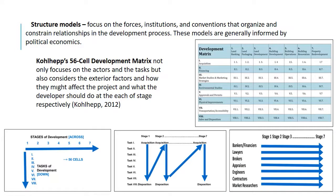Then came the structure models. Structure models focused on the forces, institutions, and conventions that organize constrained relationships in the development process. These models are generally informed by political economics. So we now have actors, economics, and the structure of development, and we start looking at the surroundings of the project. Colheb's 56-cell development matrix not only focuses on actors and tasks but also considers exterior factors and how they might affect the project at each stage.